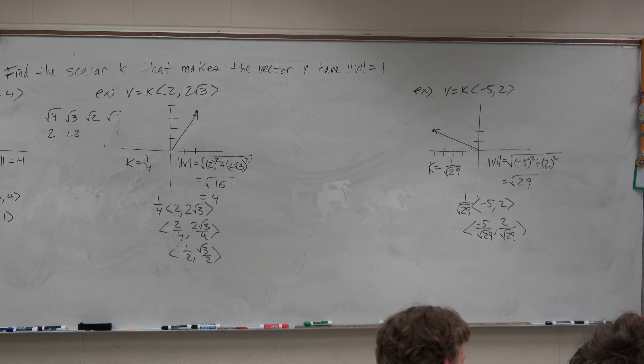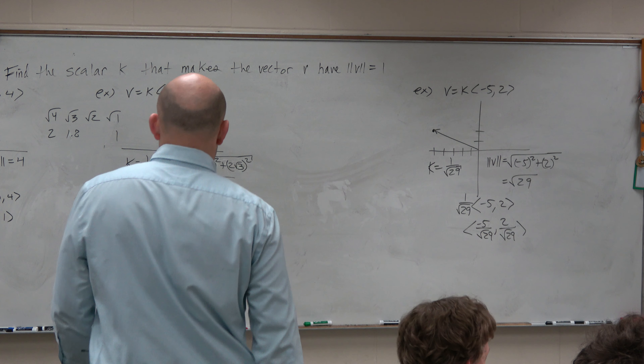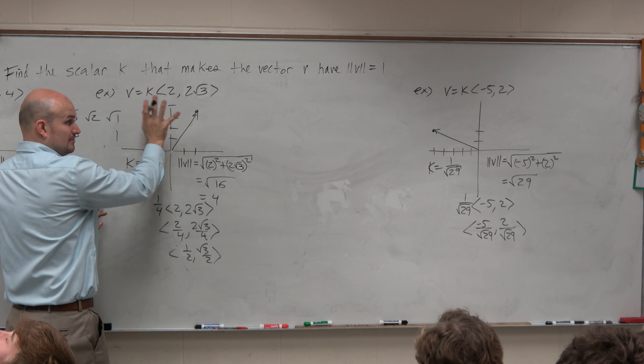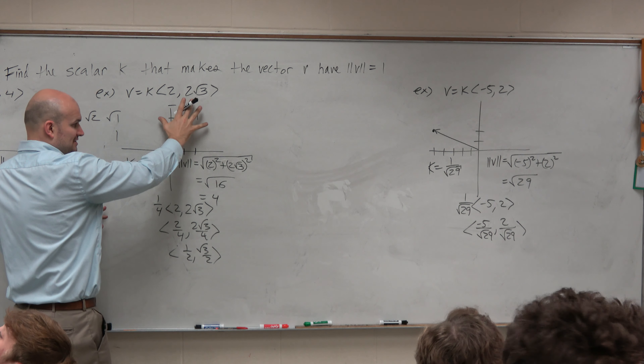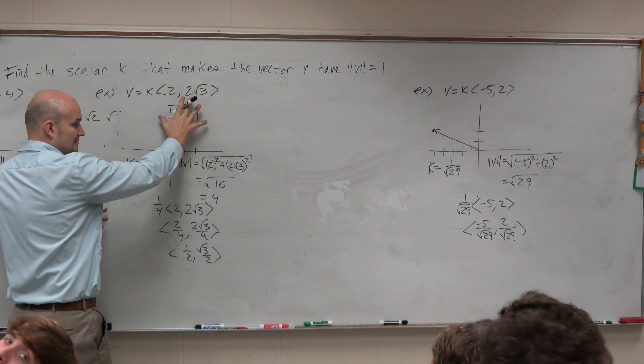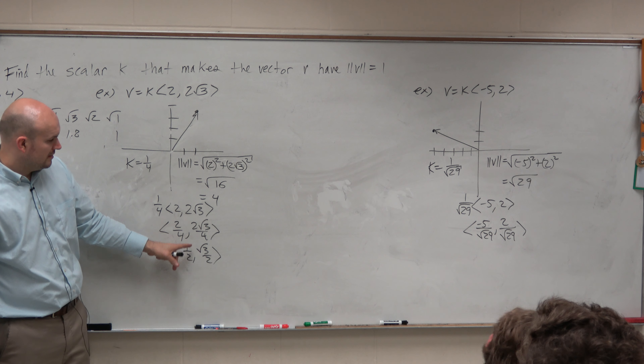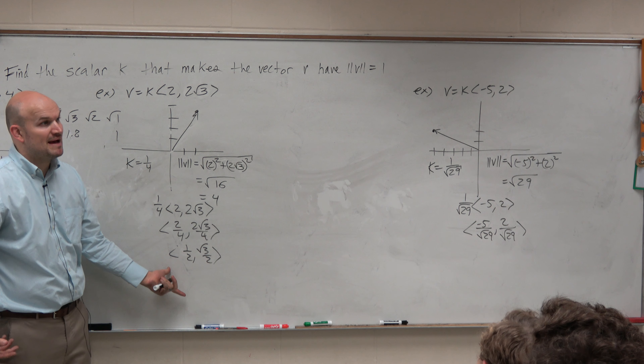So we have this formula. We have the vector, and this is really important. We go ahead and divide it by its magnitude. We found the magnitude. So then we figured out if we multiply that, it's 4. If we take that as the scalar, if we basically take our vector and divide it by 4, that gives us a vector that has a magnitude of 1.